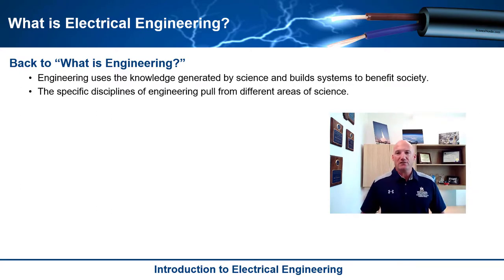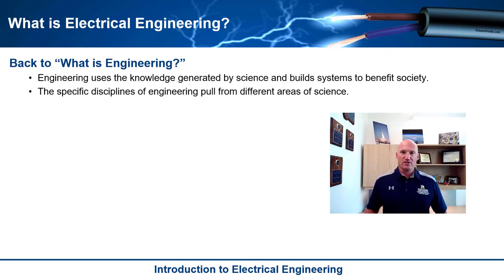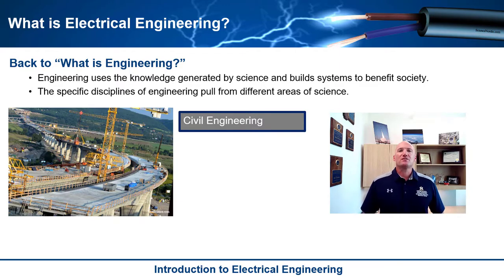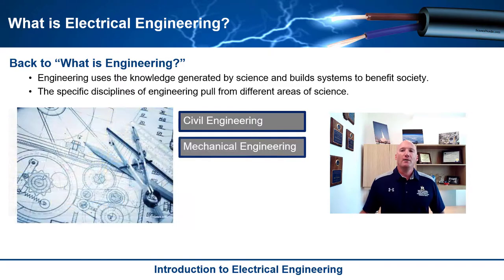There are many types of engineering disciplines, but in general there are four main types and everything else is a derivative of these. Let's start with civil engineering: civil engineering pulls knowledge from material science and geology, and they build large public infrastructure systems such as dams, roads, bridges, and airports. When we drive down the street, that's thanks to civil engineers.